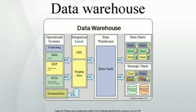Dimensional versus normalized approach for storage of data. There are three or more leading approaches to storing data in a data warehouse; the most important are the dimensional approach and the normalized approach. The dimensional approach, whose supporters are referred to as Kimballites, believe in Ralph Kimball's approach in which it is stated that the data warehouse should be modeled using a dimensional model-style schema. In a dimensional approach, transaction data are partitioned into facts, which are generally numeric transaction data, and dimensions, which are the reference information that gives context to the facts.